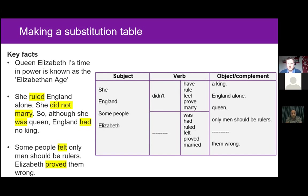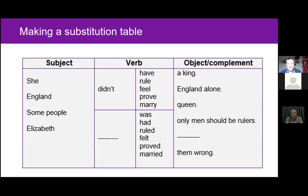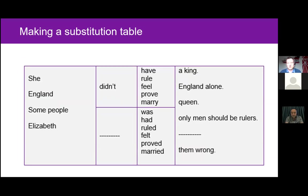That's basically how you might go about creating a substitution table for this text. One other thing to mention: on this table we included the headings 'subject,' 'verb,' and 'object' — but that's mainly for teachers to think about. With lower proficiency learners, especially at primary level, you may want to remove the grammatical headings. This will depend on your context and to what extent grammar terminology is explicitly taught in your school. They're certainly not necessary, and they could prove confusing and a barrier for some learners.